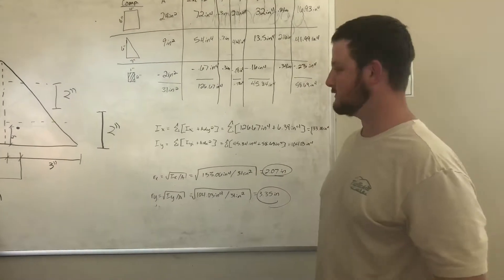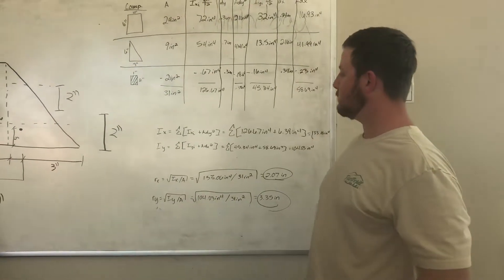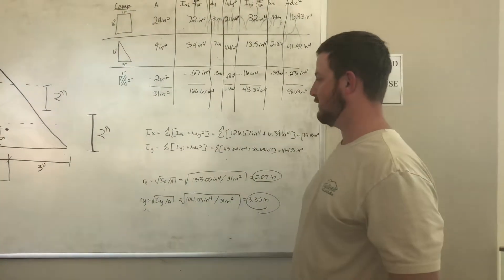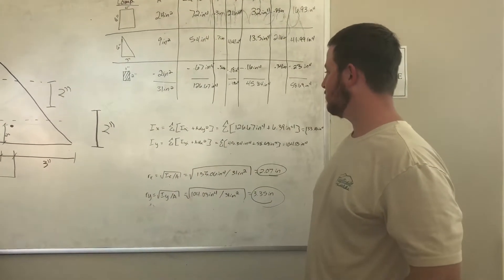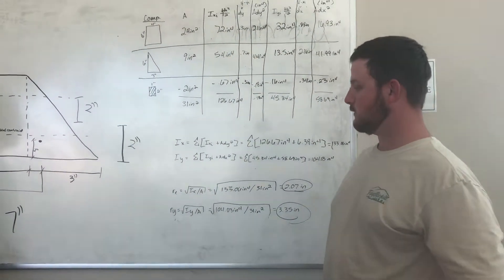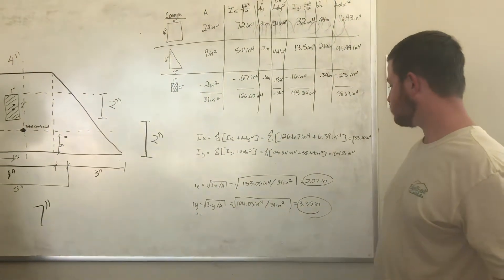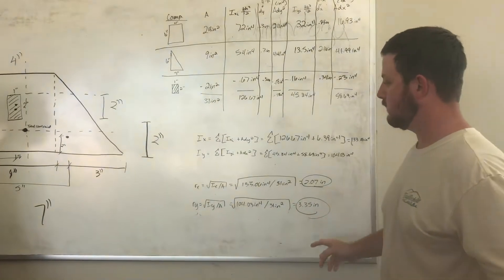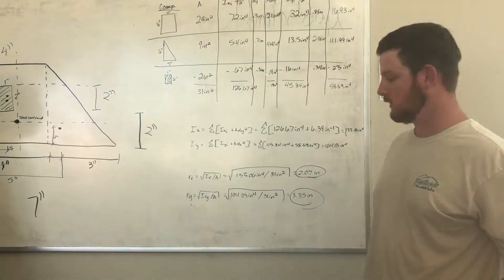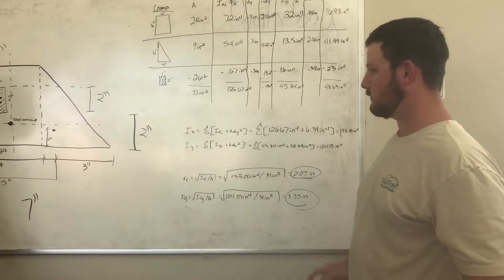To find the moment of inertia, you sum up IX and A DY squared. Same for IY - it's IY and A DX squared. For the radius of gyration, we do the square root of IX over the area. You get 2.07. For our radius of gyration for Y, it's IY over A. We get 3.25.